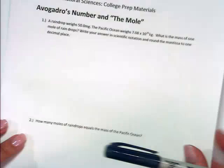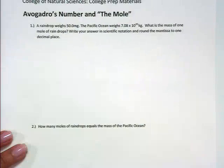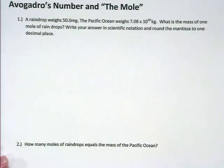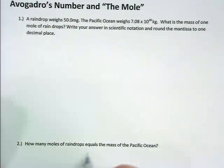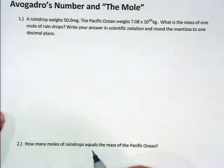Let's try another problem. Like I said, you can have a mole of anything, and that will come into place here. For the first part, it says a raindrop weighs 50 milligrams. The Pacific Ocean weighs 7.08 times 10 to the 20 kilograms. What is the mass of one mole of raindrops? Write your answer in scientific notation and round the mantissa to one decimal place.